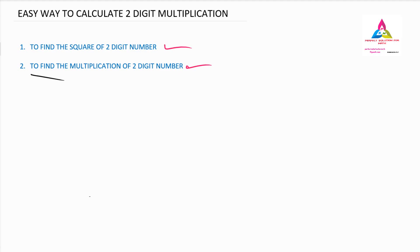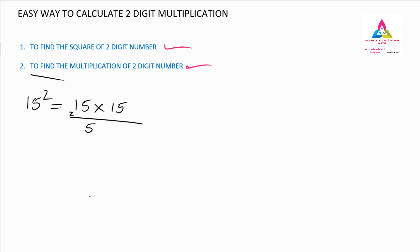Let's take some examples. To find the square of a two-digit number, take 15 squared as a simple example. You might quickly answer 225 because you already memorized it. But for those who don't know how to solve it, the traditional method is 15 into 15: 5 times 5 is 25, carry 2; 1 times 5 plus 5 times 1 gives 7 plus 2 carry equals 12; result is 225.